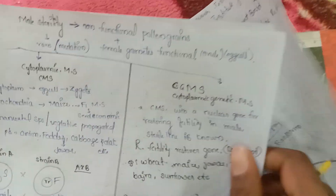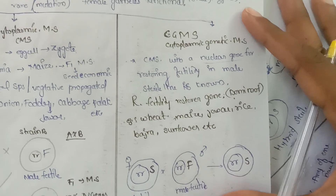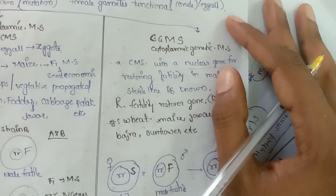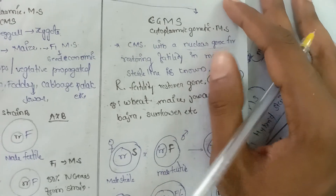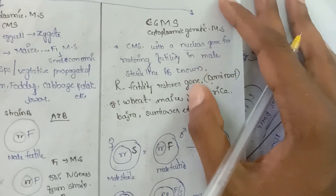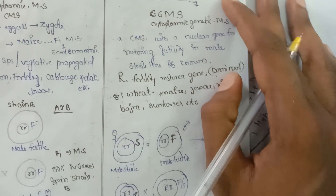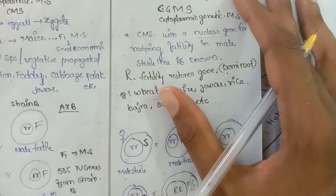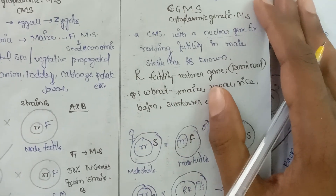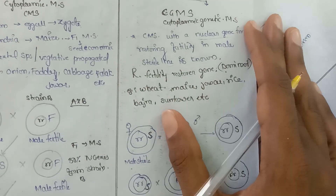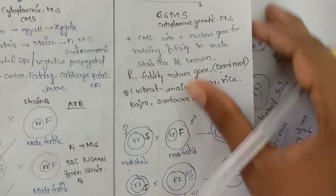Cytoplasmic Genetic Male Sterility (CGMS) is similar to CMS except that the nuclear gene which restores fertility is known for these lines. The restorer gene is always dominant, represented by capital 'R'. Examples of CGMS crops are wheat, maize, jowar, rice, bajra, sunflower, and many other crops.